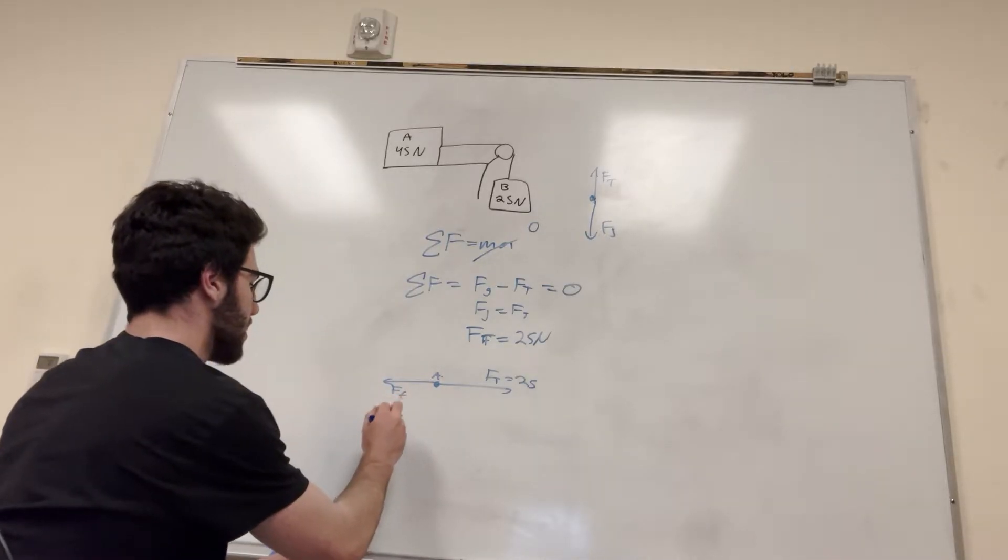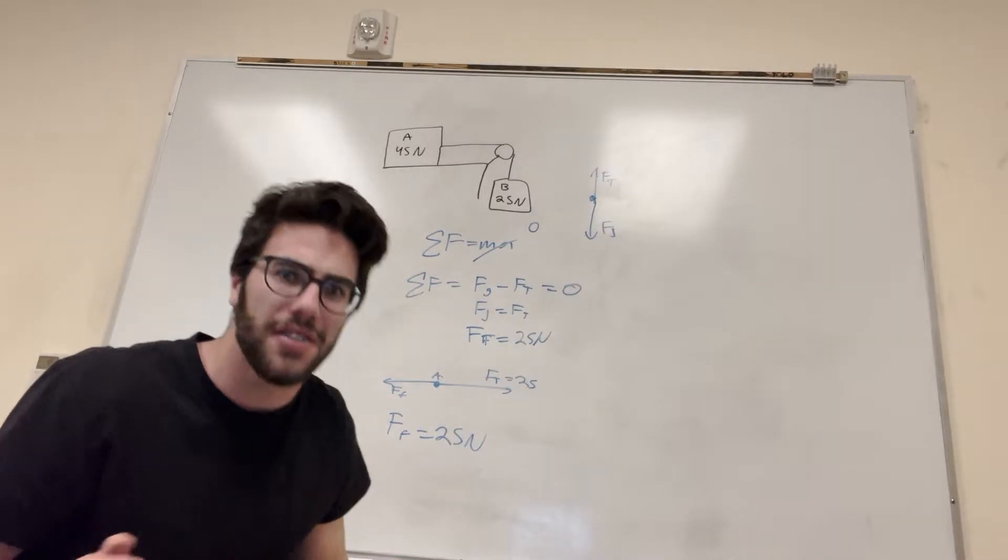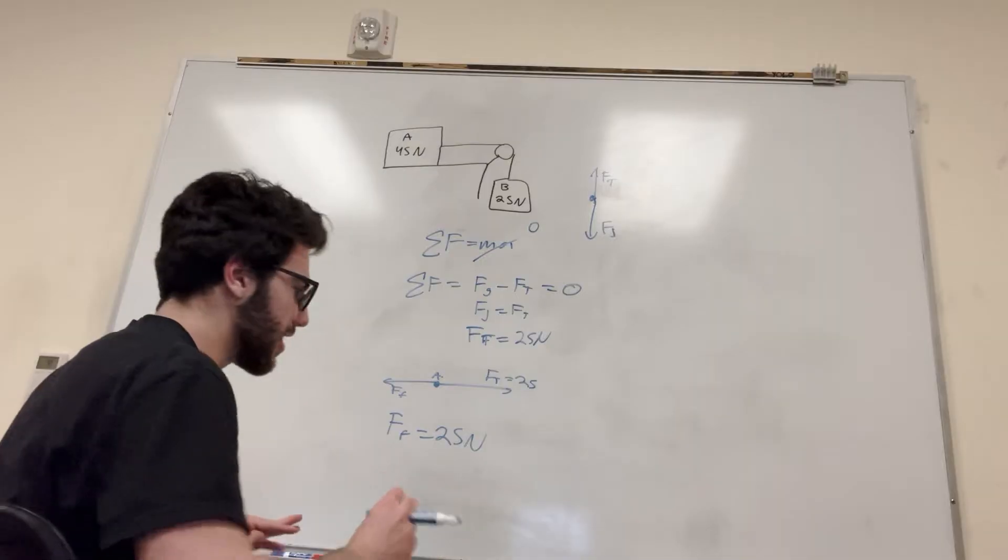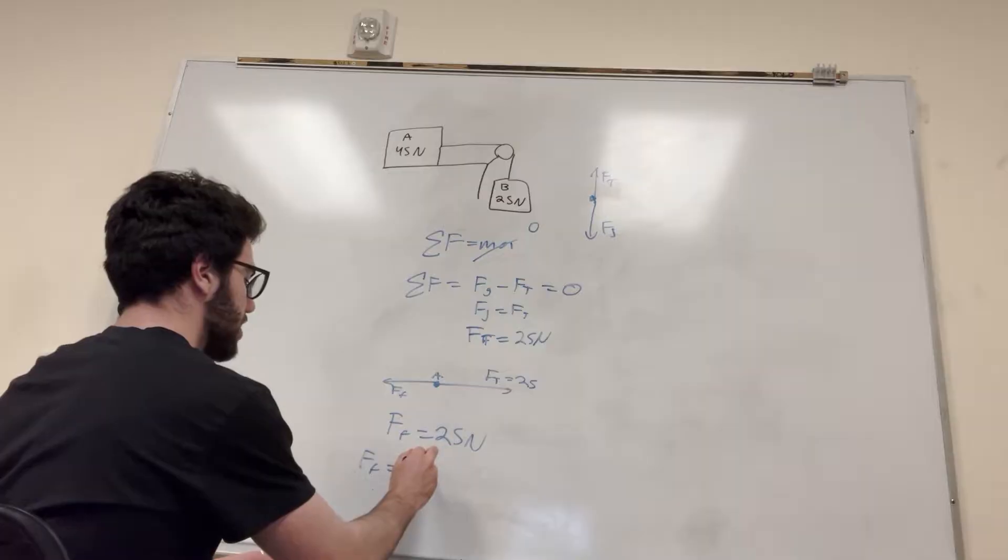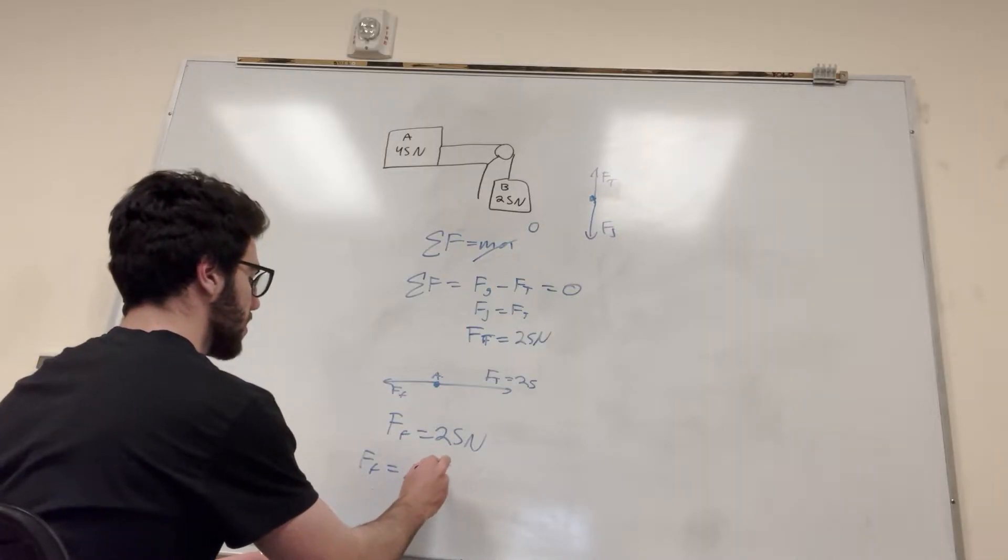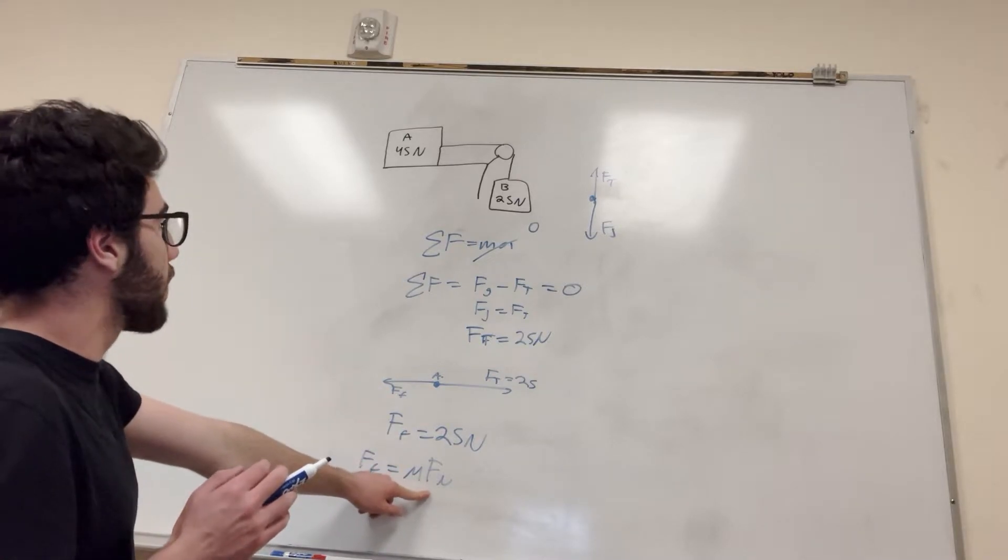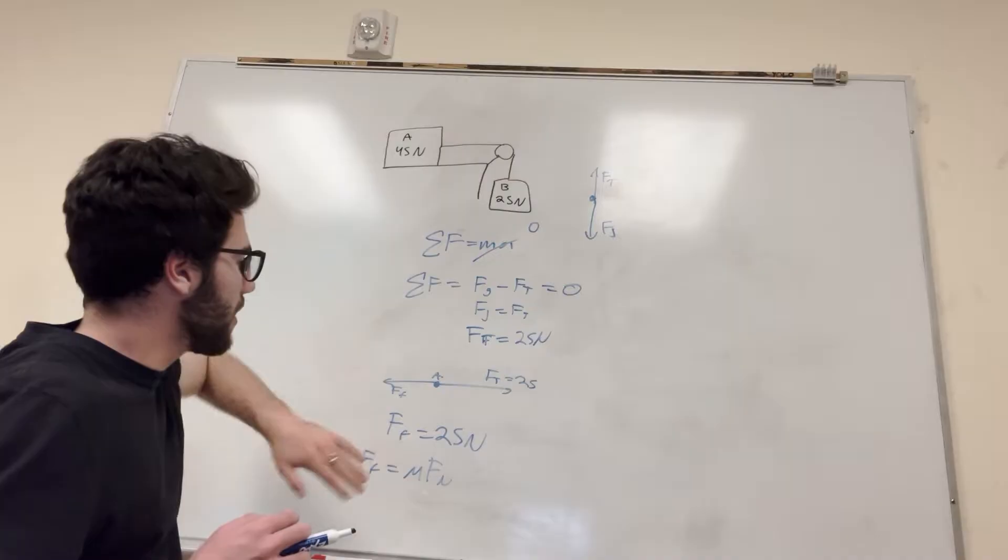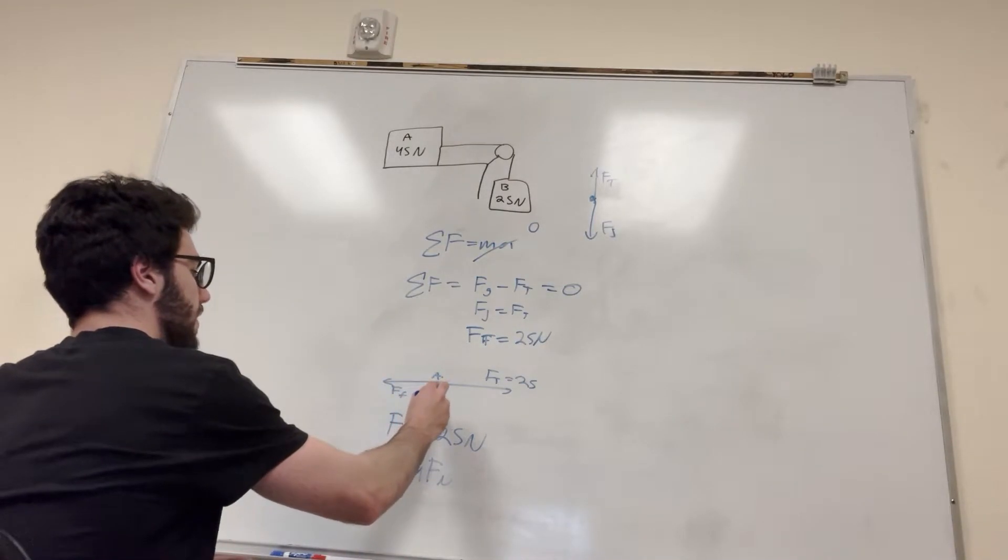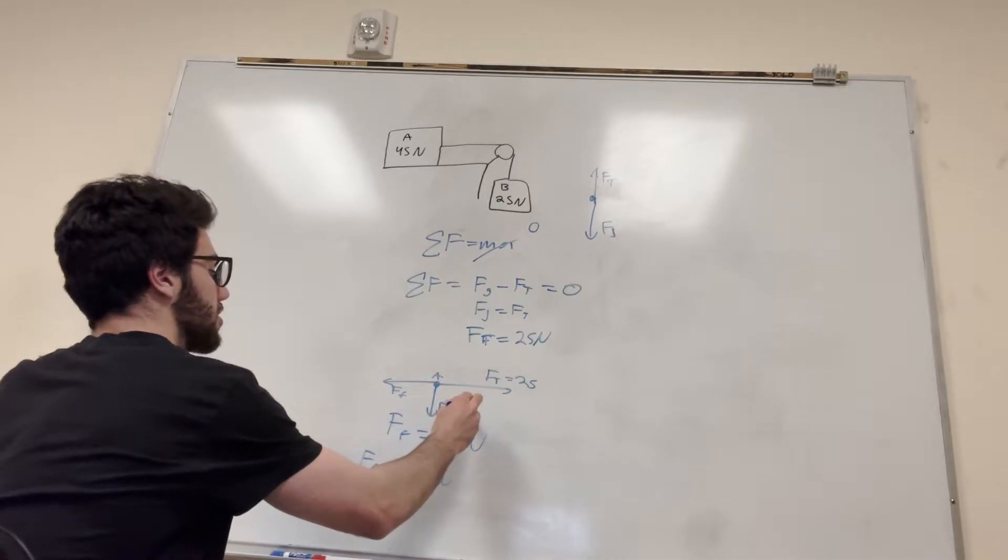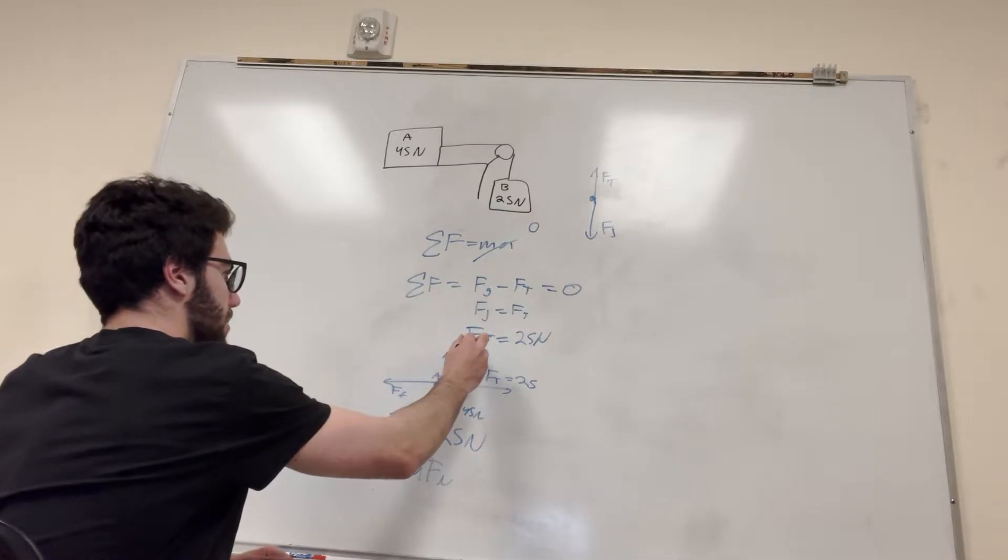So, you can say force of friction is equal to 25 newtons. Okay, great, but it's asking for the coefficient of friction, so we need a formula for this. So, the coefficient, force of friction is equal to the coefficient of friction times force normal. Okay? So, we're looking for this. That means we need to find force normal. So, I didn't draw the rest of this force body diagram, I just drew the important stuff. But another thing we have is force of gravity, which is equal to 45 newtons, right, because that's its weight. And because it's on a level surface, the force normal is also gonna be equal to 45 newtons.